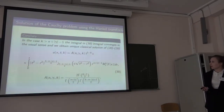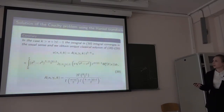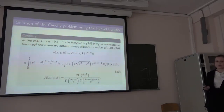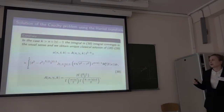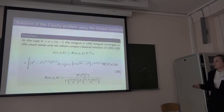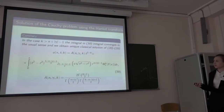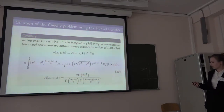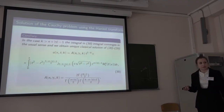When k is greater than a certain threshold, we can obtain a regular solution because the convolution product becomes a regular integral which we can calculate directly. Using an analytic continuation method, we can obtain the regular solution for k less than this threshold as well. Here, the weighted spherical mean is constructed using the generalized translation, as presented earlier.